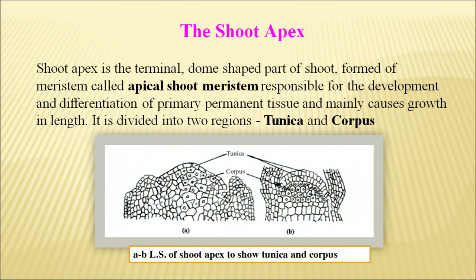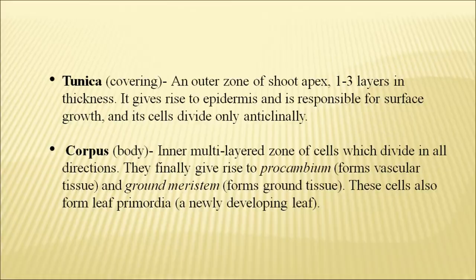The shoot apex is the terminal dome-shaped part of the shoot. It is formed of meristem called the apical shoot meristem and is responsible for the development and differentiation of primary permanent tissue, mainly causing growth in length. It is divided into two regions: the upper outer layer called the tunica, which provides covering and protection, and the corpus, which is the fast-dividing tissue below the tunica.